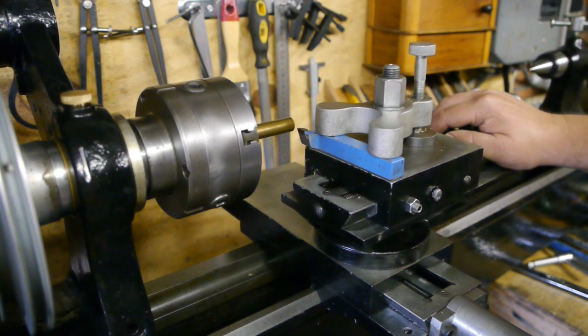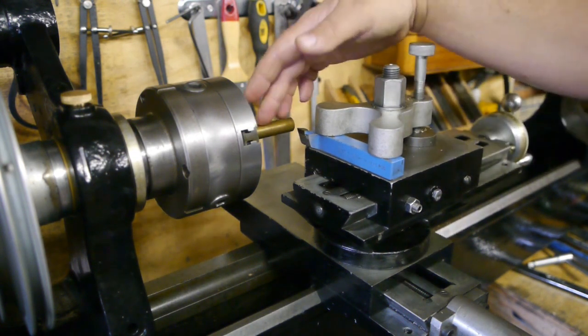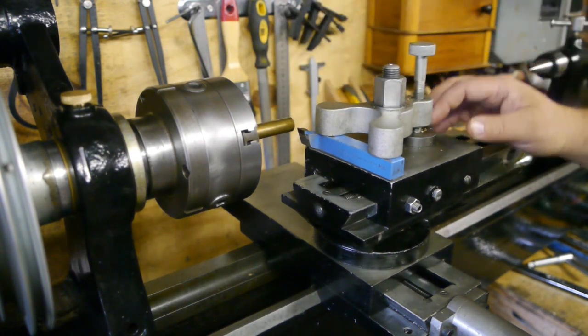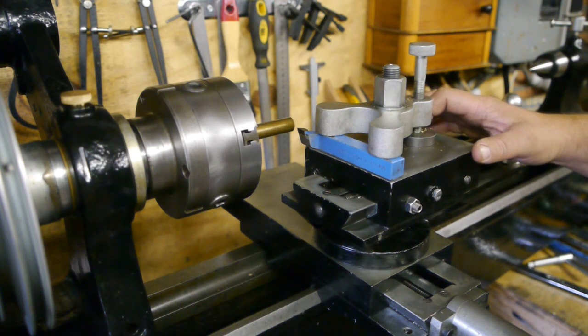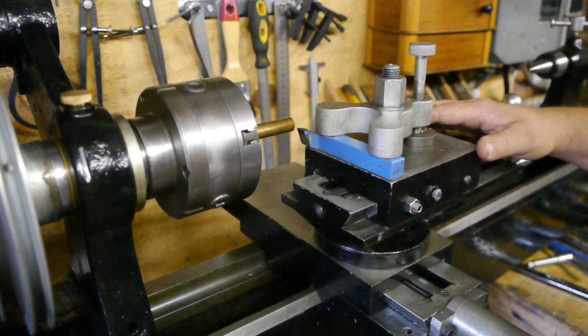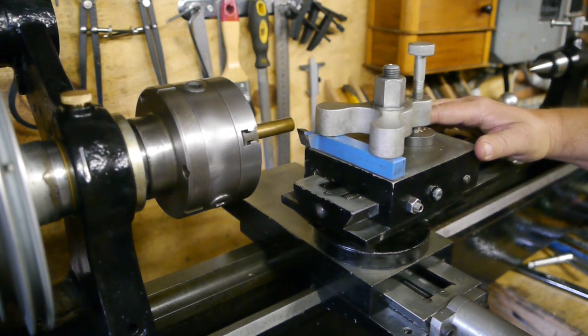So today I'm going to make a reference bar that will go between centers and I can use that with a dial indicator to hopefully set up the cross slide a bit more precise.